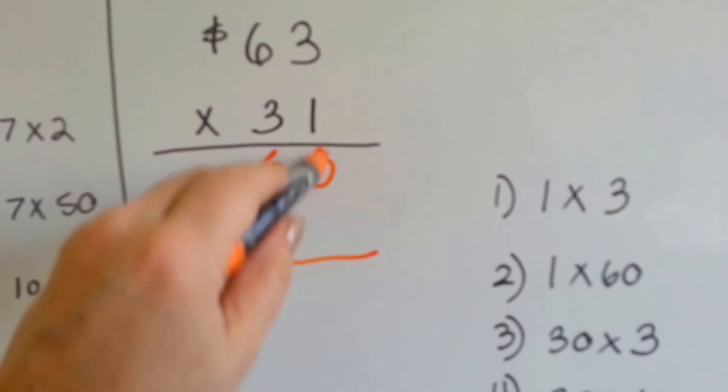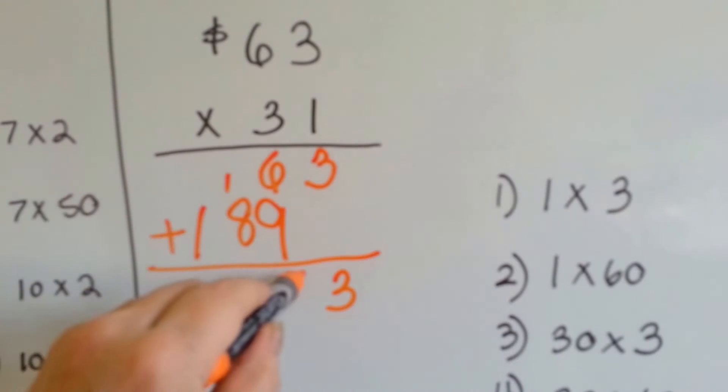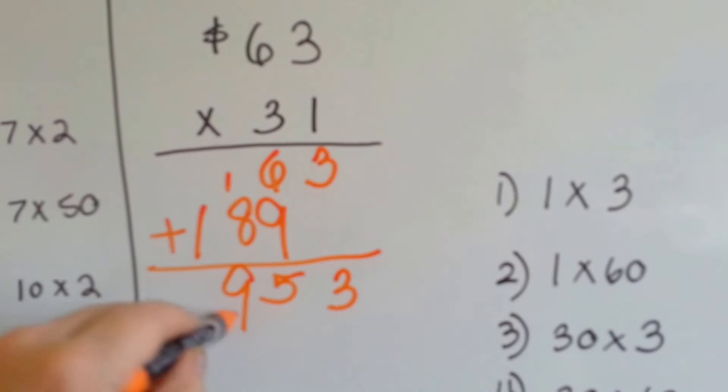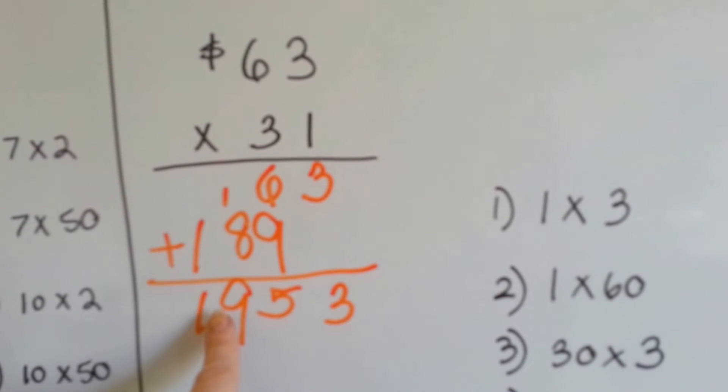We're going to add this up. We're going to get 3. 9 and 6 is 15, carry the 1, put the 5 down. 8 times, 8 plus 1 is 9, and we drop down our 1. Let's be careful of this. We can't put that there, can we? We're doing money.